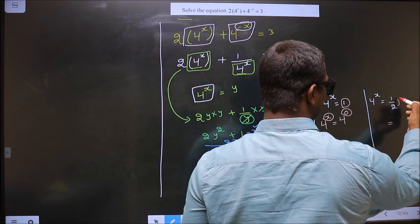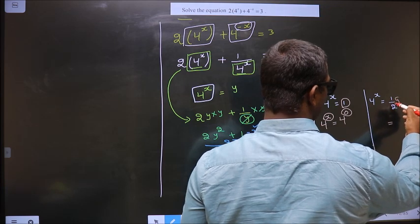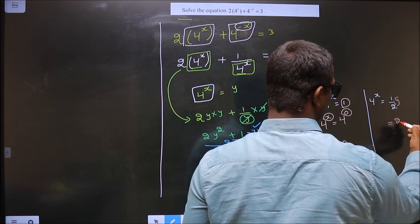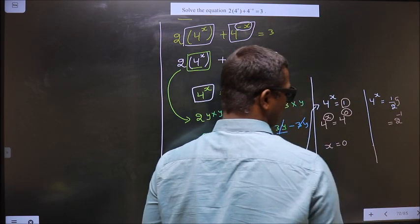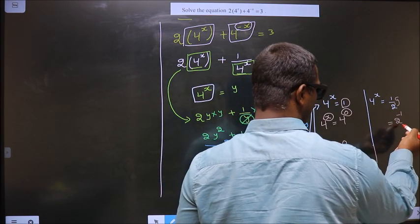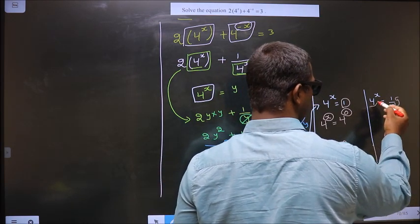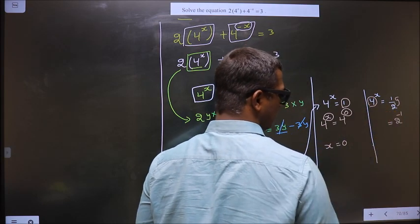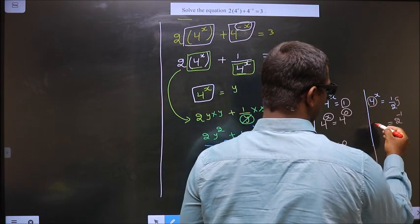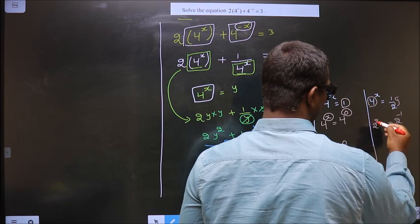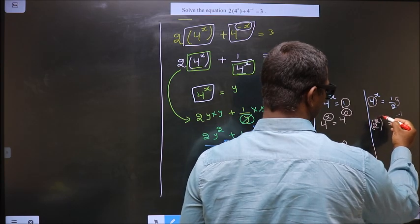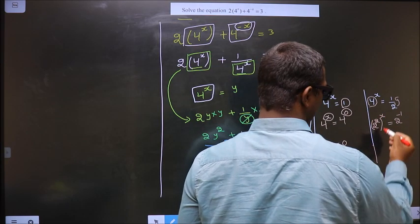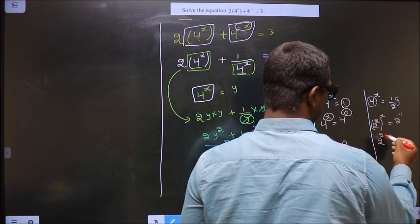Here, when I take this to the top, here you have plus 1, when it goes up it will become minus 1. So here the base is 2, so here also you should get the base to be 2. For that, here I have 4, I replace it with 2^2. So now it will become 2^(2x)...